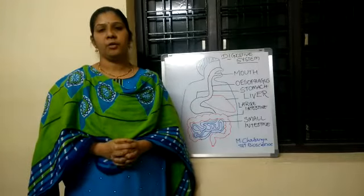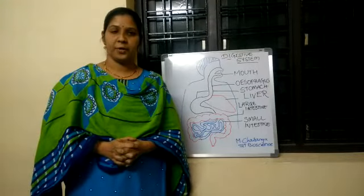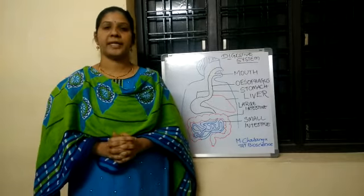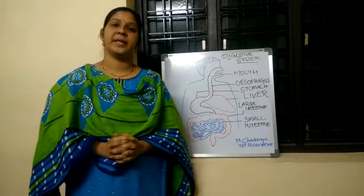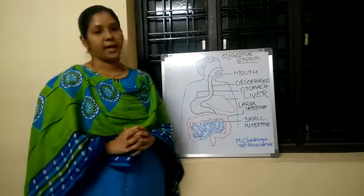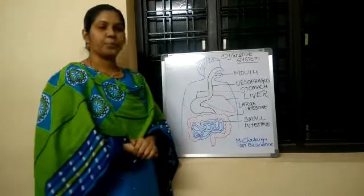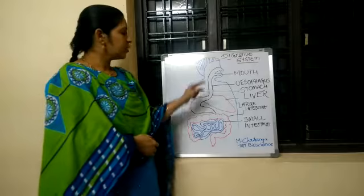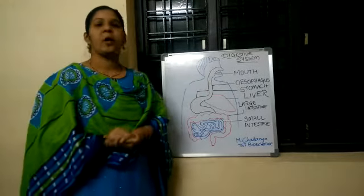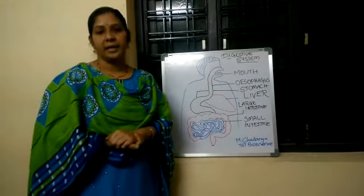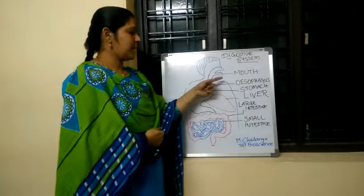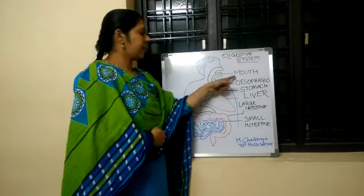Good morning children, hope all of you are doing good. In the previous video we learned about the process of digestion in human beings. Now let us see the parts of the digestive system and how they are arranged one after the other. This is our digestive system, also called the alimentary canal of the digestive system.